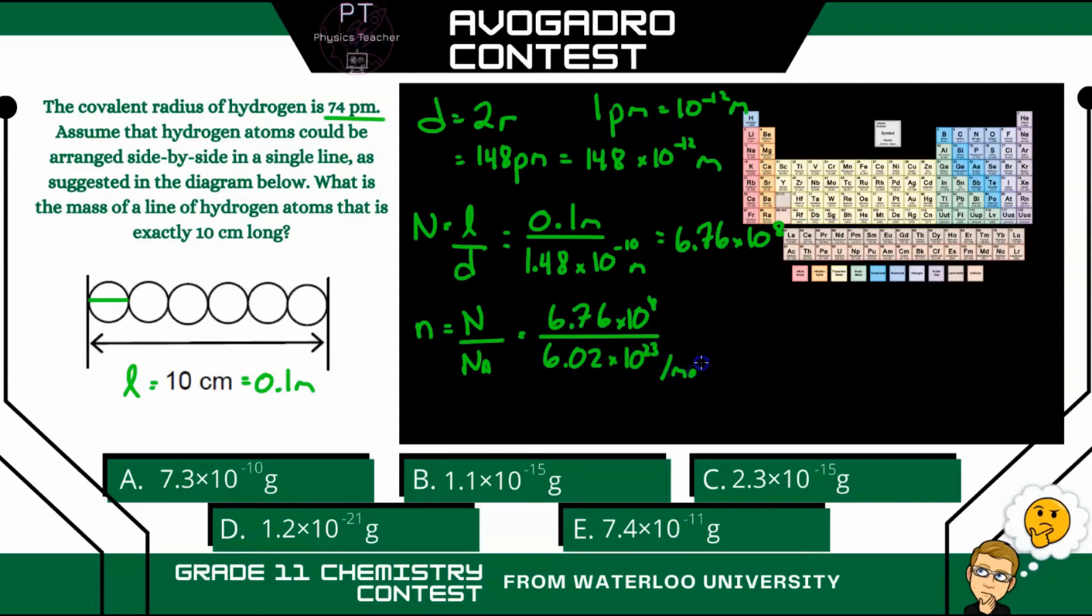So that's per mole. And so that'll give us 1.12 times 10 to the minus 15 moles.